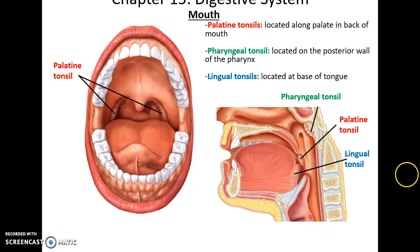We also have tonsils: the pharyngeal tonsil in the back of the nasopharynx, the palatine tonsils at the border between the pharynx and the oral cavity, and of course the lingual tonsils already mentioned.